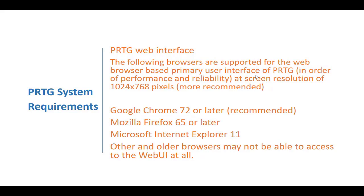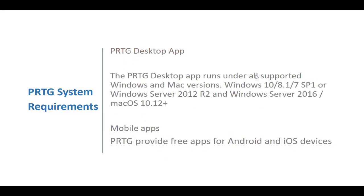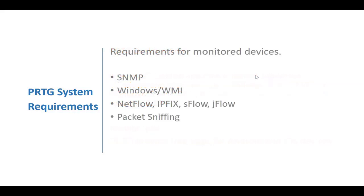For the PRTG web interface, Google Chrome 74 or later is recommended as the best option. Firefox 65 or later and Microsoft Internet Explorer 11 are also supported; other browsers may not be able to access the web UI at all. The PRTG desktop app can be installed on Windows 10, 8, or 7 SP1, or Windows Server 2012 R2 and 2016, or specified macOS versions. You can also access your PRTG server via mobile apps for Android or iOS.